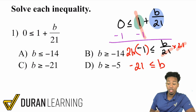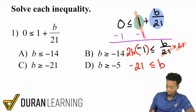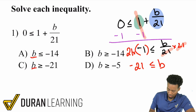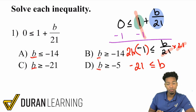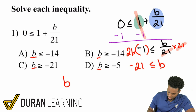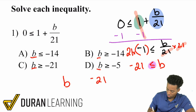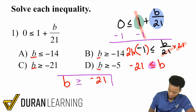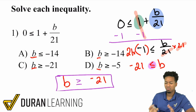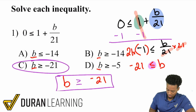Now that we have negative 21 is less than or equal to B, we're good to go. The only thing is, the variable is on the right side, so we're going to flip them over to get B and negative 21. But we need to flip that inequality from less than or equal to, to greater than or equal to. And that makes the answer here C.